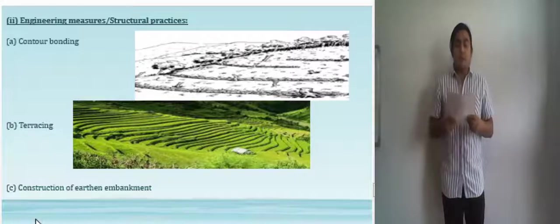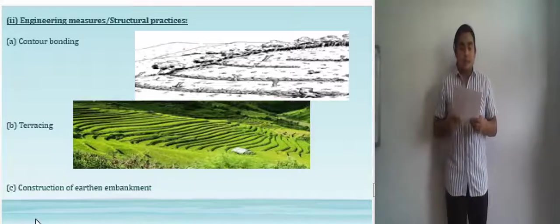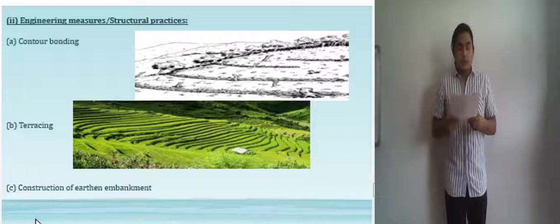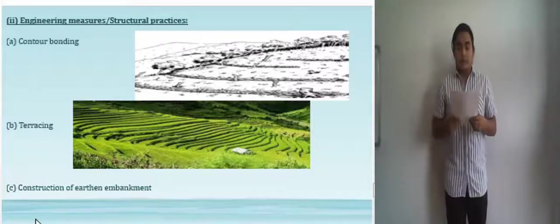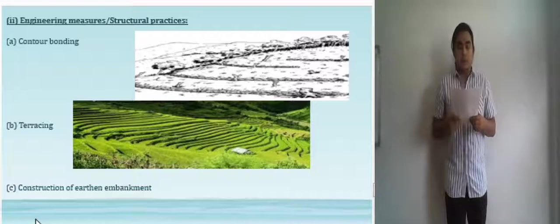Now in the engineering measures or structural practices. The first one is contour bunding, which involves the placement of lines of stones along the natural rises of landscape and contour farming. These techniques help to capture and hold rainfall before it becomes runoff.